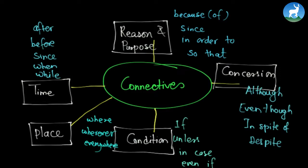The first one is called reason and purpose connective. It consists of words like 'because' or 'because of', 'since', 'in order to', and 'so that'. For example: I went to the market so that I could buy a kilo of rice. I went to school in order to study. Since I love studying, I went to school. Because of my younger sister, I could not study. Because of the falling rain, I could not play football. So these are what we call reason and purpose connectives.